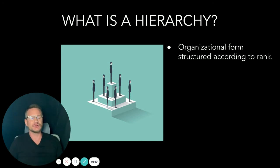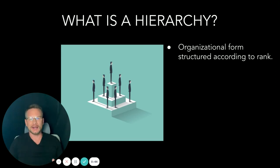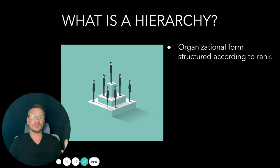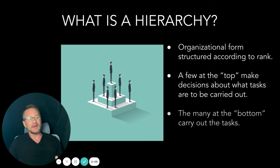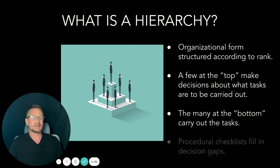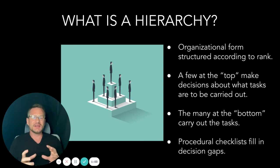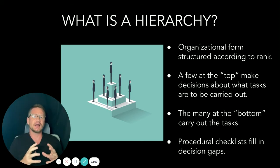We certainly understand the form intuitively. It's an organizational form structured according to rank. There are superordinate nodes — people who give orders — and subordinate nodes — people who take commands and carry out tasks. There are a few at the top who make decisions about what tasks are to be carried out, and the many at the bottom carry out the tasks. A lot of times you'll see procedural checklists to fill in the gaps, but more or less, this is how a hierarchy is governed.